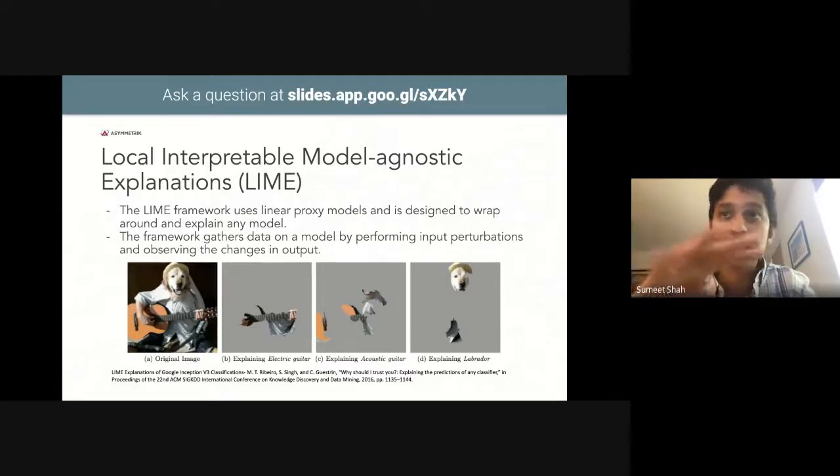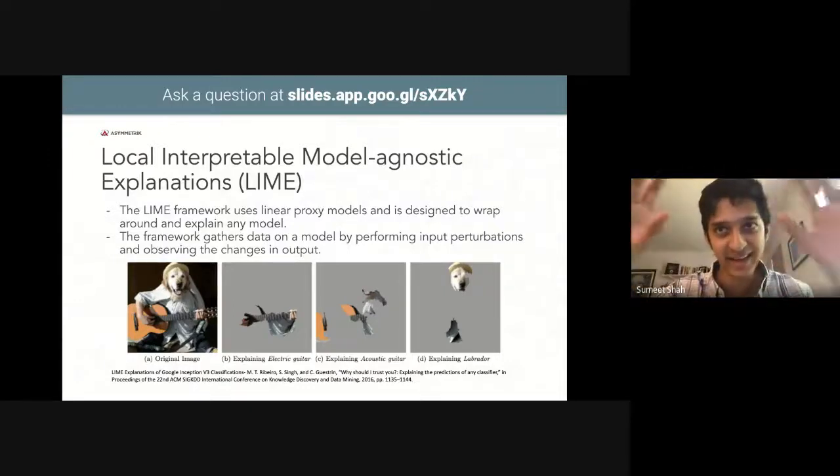In this diagram, which is taken from the paper by Ribeiro, the original creator of the LIME framework, we can see that you have this original image with a dog playing the acoustic guitar. After performing those input perturbations to see which parts of the image are most relevant to the classification, it highlights these pieces of the image accordingly. And we use that to reconstruct these, which serve as the explanations.